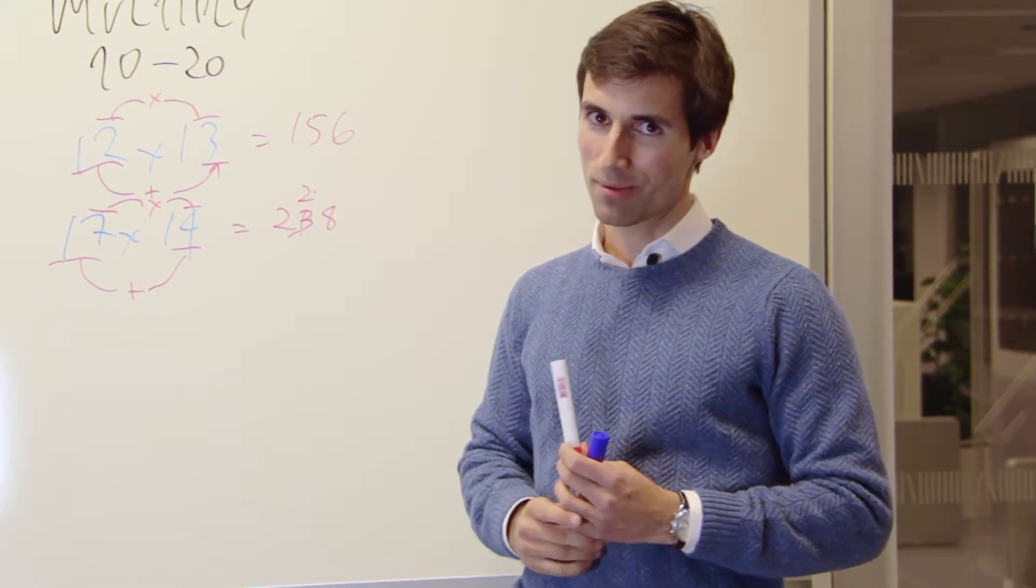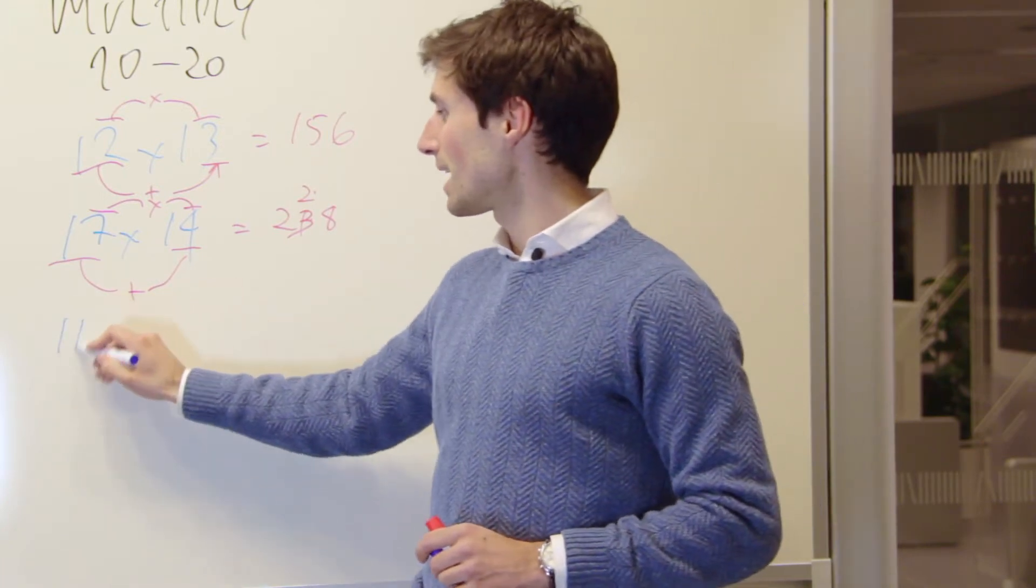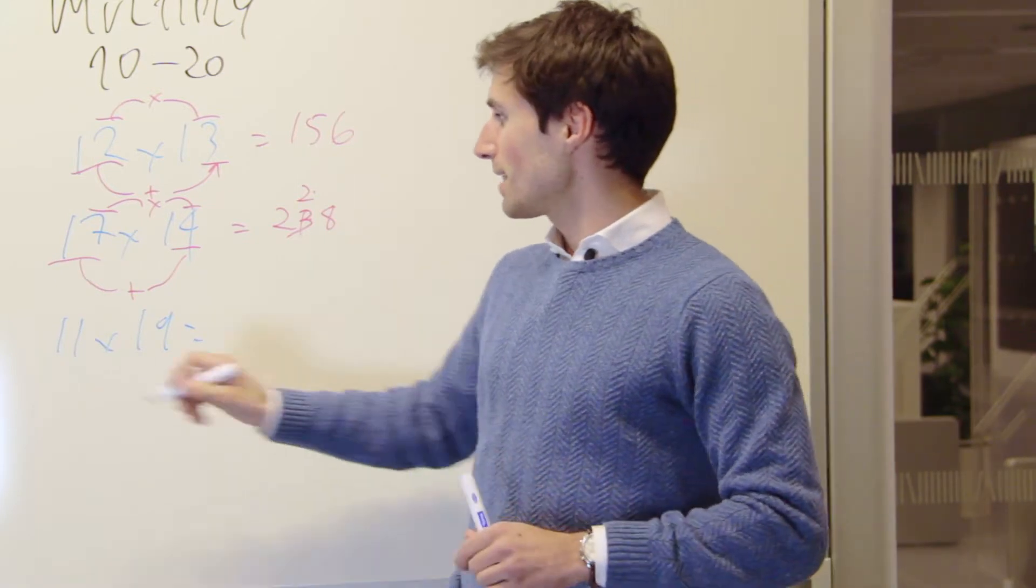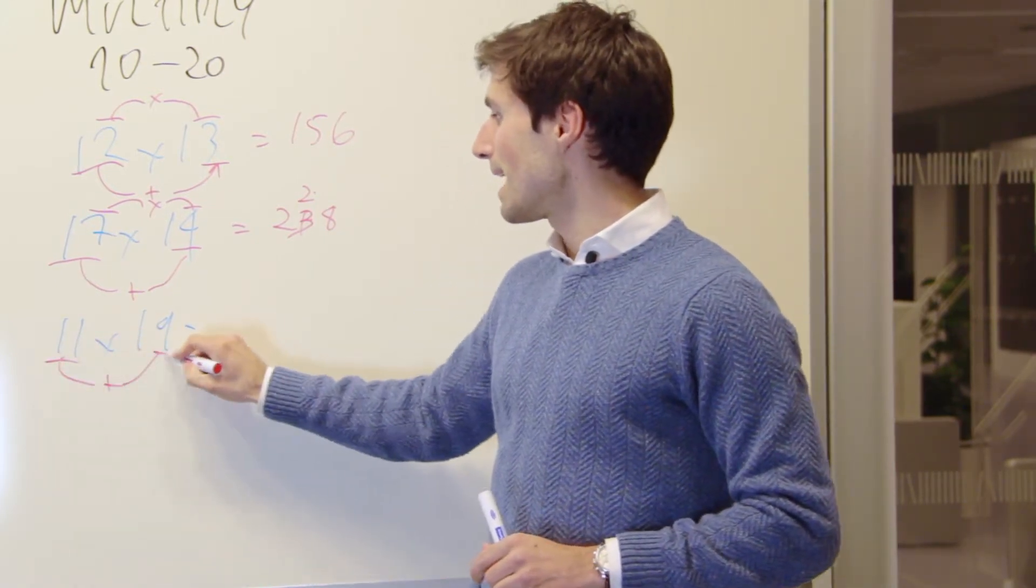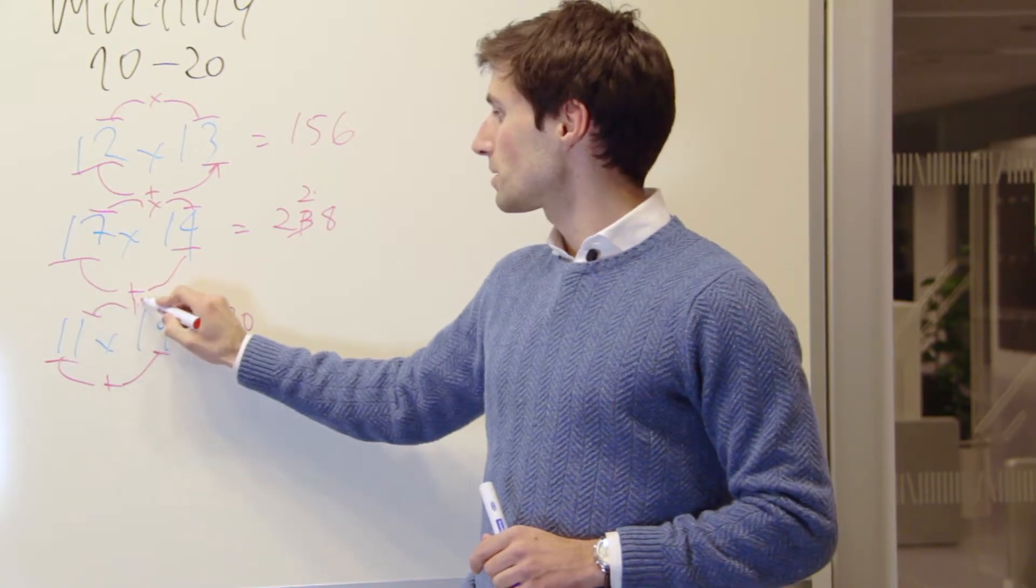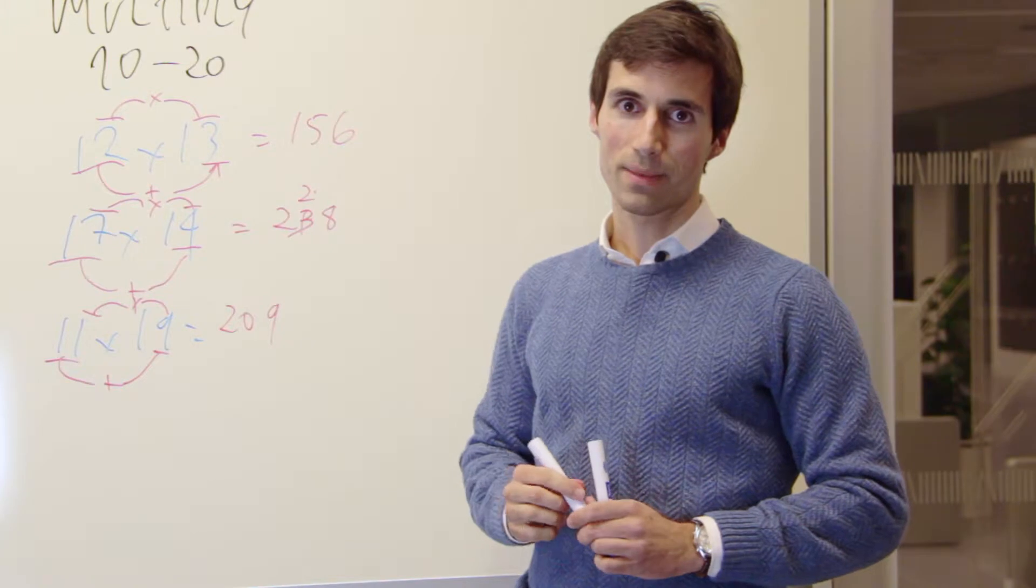Let's try a few more. Math, give me two numbers. 11. Times? 19. So, pick the 11 and add 9. You get 20. And then 1 multiplied by 9. That is 9. So, 209 is our result.